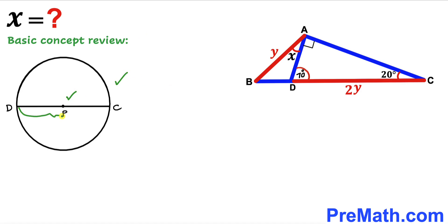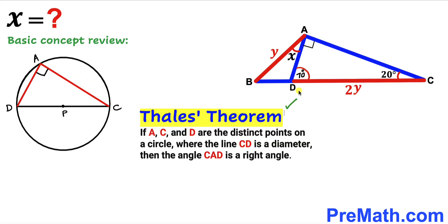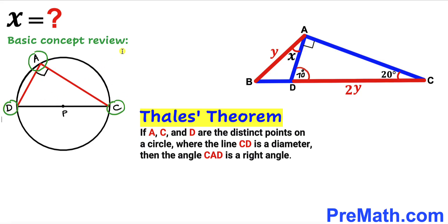Let's focus on a circle with center P whose diameter is CD. We introduce chords AD and AC, and recall Thales' theorem. According to this theorem, if A, C, and D are three distinct points on the same circle and CD is the diameter, then angle CAD is a right angle — 90 degrees. We can see that A, C, and D lie on the same circle and CD is the diameter, confirming that angle CAD is 90 degrees.